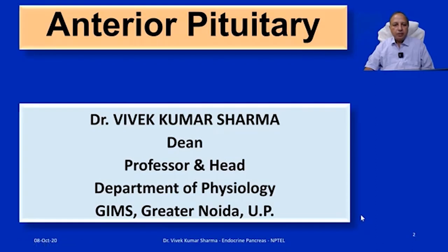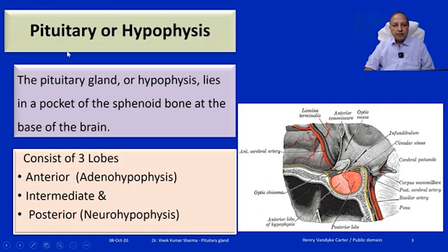Greetings from my side. I am Dr. Vivek Kumar Sharma, Dean, Professor and Head, Department of Physiology, Greater Noida, Uttar Pradesh. Today I am going to talk about the anterior pituitary gland. The pituitary is also called the hypophysis and lies in a pocket of the sphenoid bone at the base of the brain. It consists of three lobes: the anterior lobe called the adenohypophysis, the intermediate lobe, and the posterior lobe called the neurohypophysis. The intermediate lobe is not well developed in human beings.